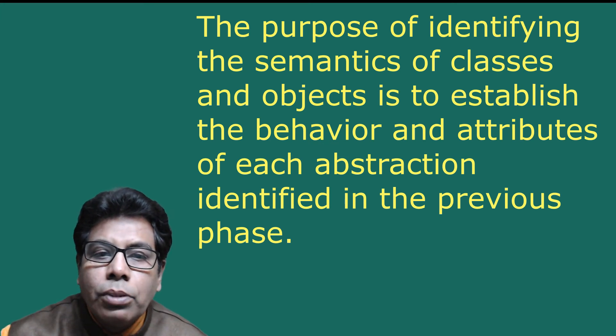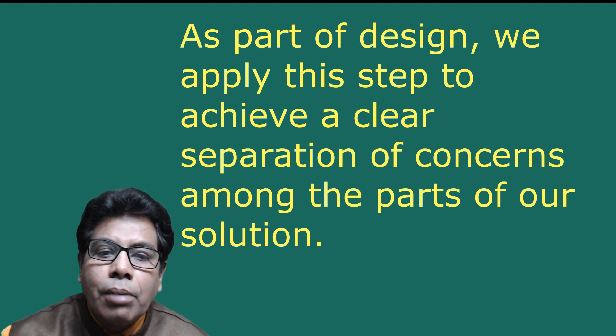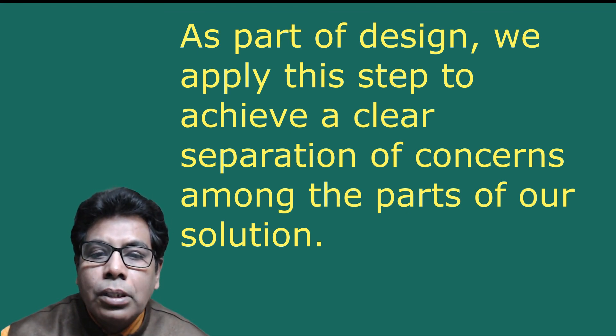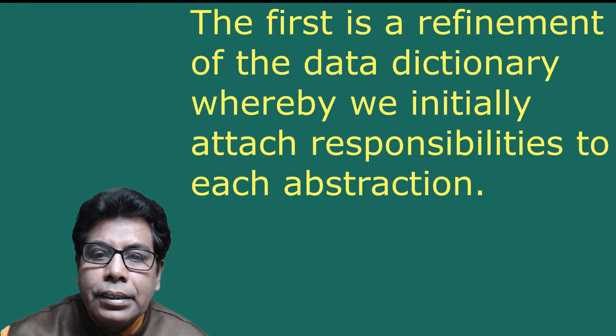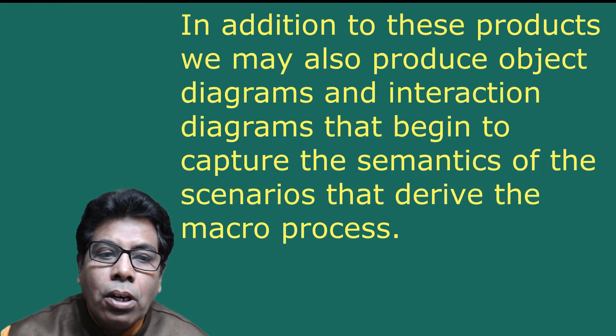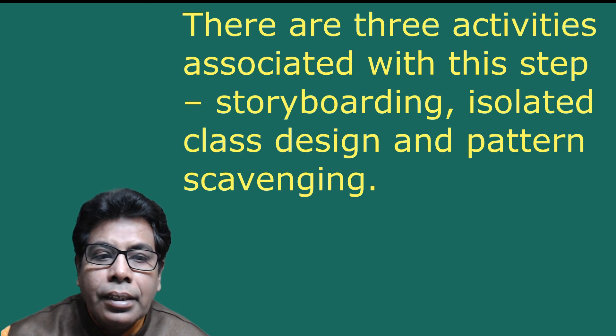The purpose of identifying the semantics of classes and objects is to establish the behavior and attributes of each abstraction identified in the previous phase. As part of analysis, we apply this step to allocate responsibilities for different system behaviors. As part of design, we apply this step to achieve a clear separation of concerns. Products include: refinement of the data dictionary, database schema if applicable, and object diagrams and interaction diagrams that capture the semantics of scenarios. The three activities associated with this step are storyboarding, isolated class design, and pattern scavenging.